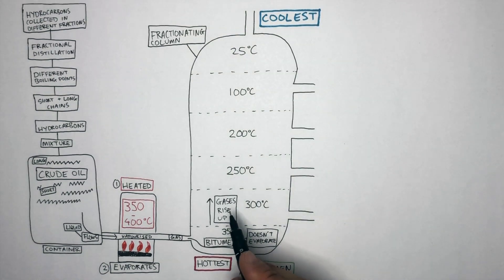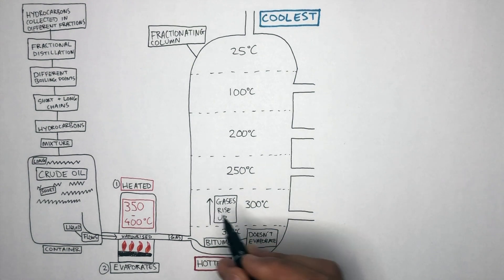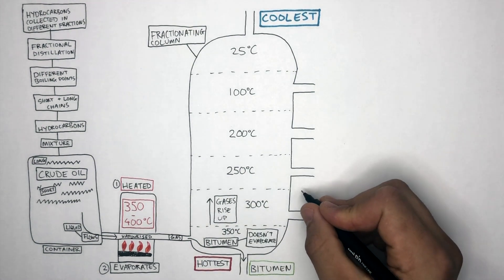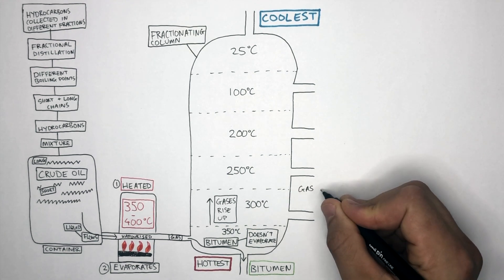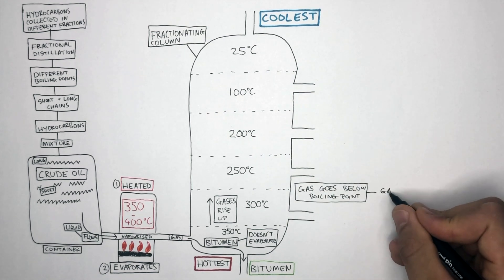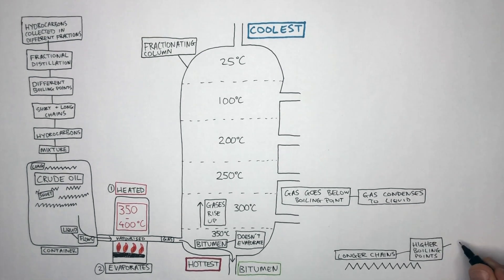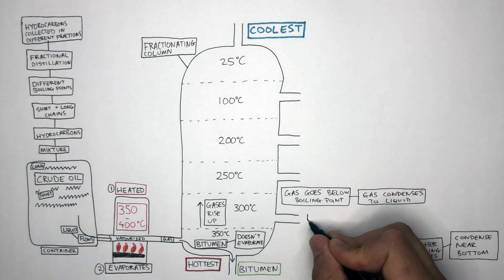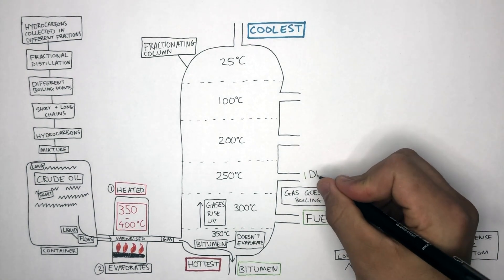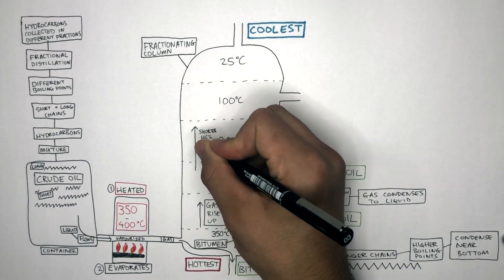The gases rise up, and any gas with a boiling point between 300 and 350 degrees Celsius will condense as it goes below its boiling point — the gas condenses to a liquid. The longer zigzag lines represent the longer chain hydrocarbons, which have higher boiling points and condense near the bottom. The first fraction to condense near the bottom after bitumen is fuel oil. Another long chain fraction to be collected is diesel oil.